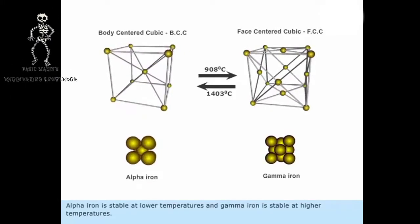Alpha iron is stable at lower temperatures, and gamma iron is stable at higher temperatures.